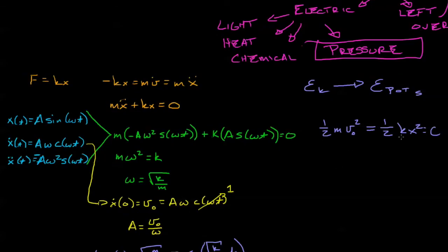So let's go ahead and solve for x and find out what we have. We have x squared equals m v0 squared over k. Take the square root of both sides, and we have square root of m over k, v0 equals x.